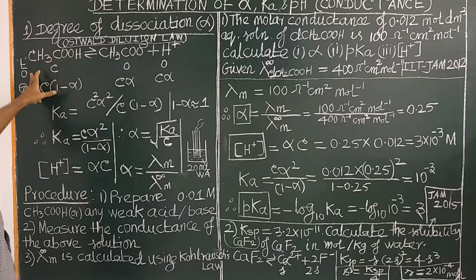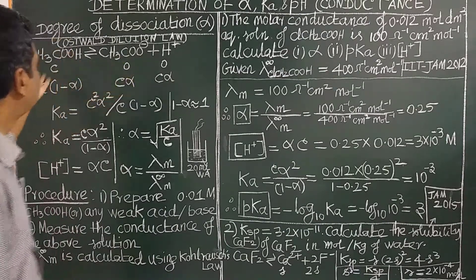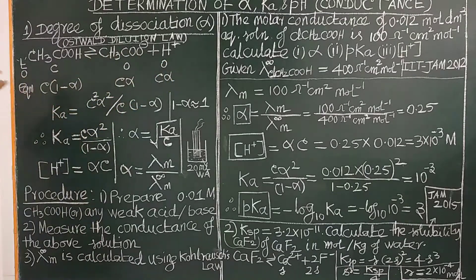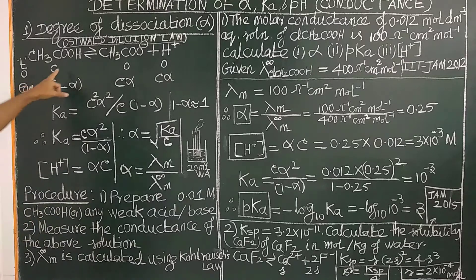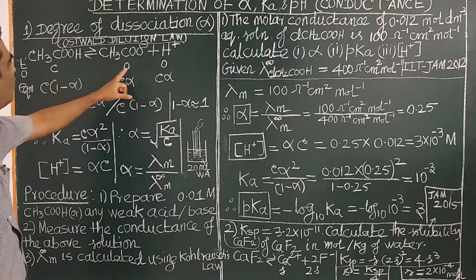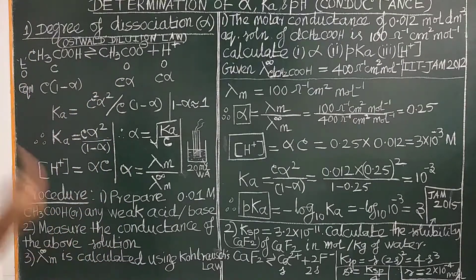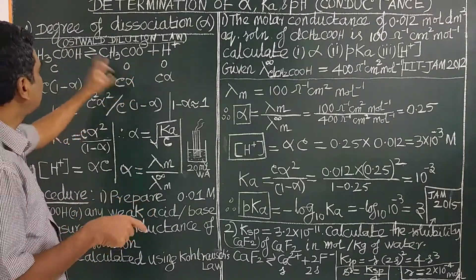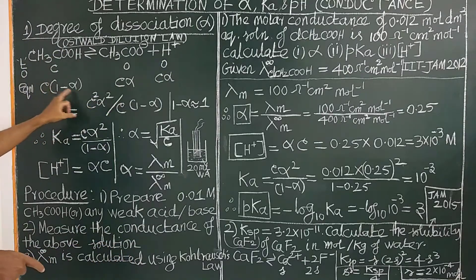C moles per liter is initially equal to 0 for the ions. After equilibrium, if the degree of dissociation is alpha, then the concentration of undissociated acid is C(1 − α), and the concentration of dissociated ions is Cα.